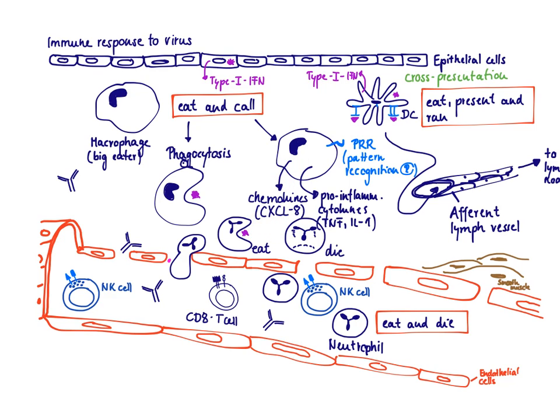CXCL8 is a major chemoattractant for neutrophils. The neutrophil, with the slogan 'eat and die,' is a very good phagocytic cell but has only a very short half-life. It circulates in the blood and will only exit once called, using the roll-stop-exit strategy to get to the site of infection, eat up viral particles, and eventually die.